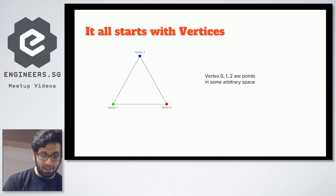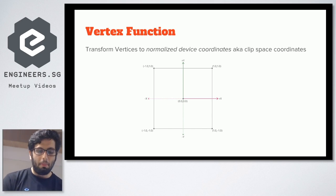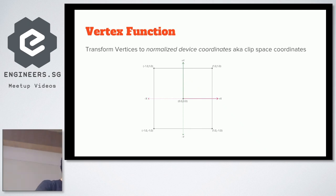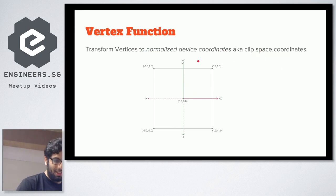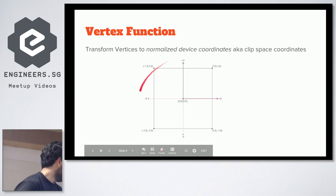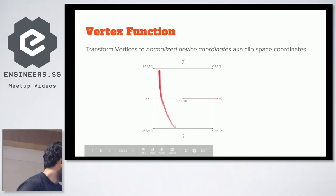What we will define is this thing called a vertex function. A vertex function's job is to transform these vertices that are in some arbitrary 3D space into this normalized device space, which is a 2D space. These device coordinates are also called clip space coordinates. They exist in this special coordinate space. On iOS, this coordinate space varies from minus 1 to 1 on both the x and y axis.